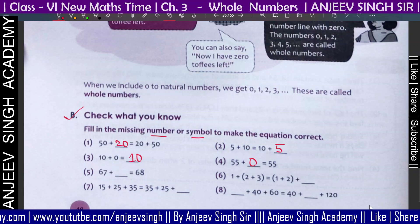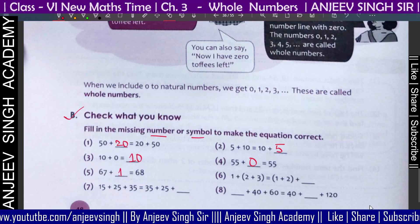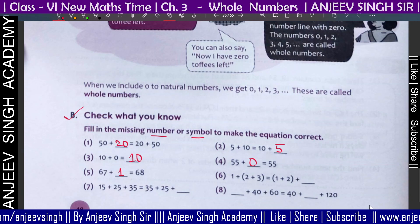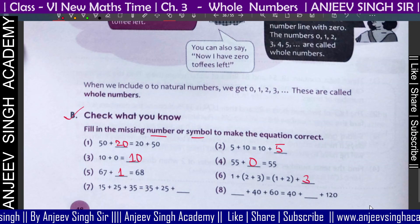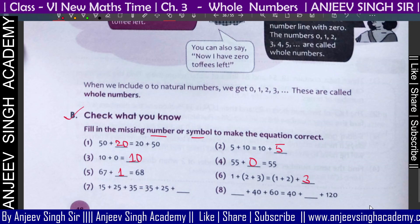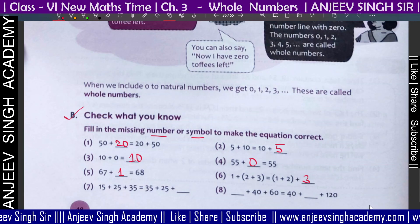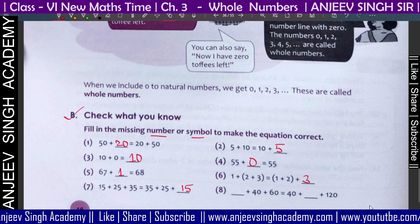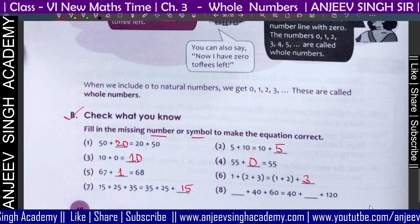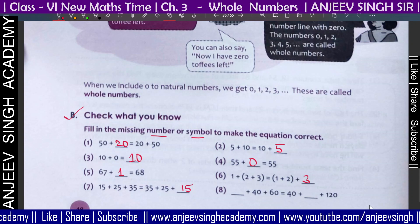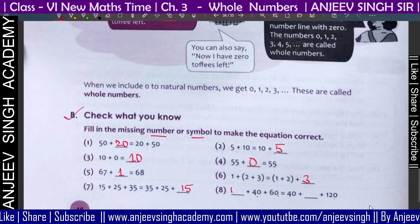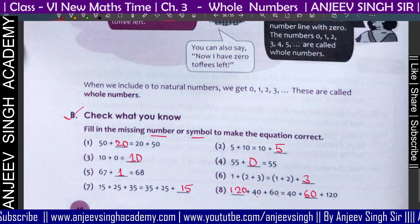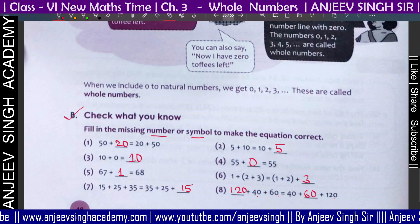Next: 67 plus dash equals 68 — we add 1. Using association: 1 plus 2 plus 3. Now 15 plus 25 plus 35 gives 50, then 40 plus 60 is 100, and 40 plus 80 gives 120. So here: 40, 120, 60, 120, 60 — sort these out.